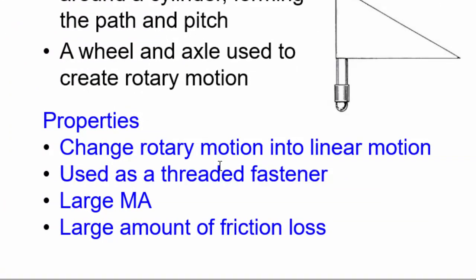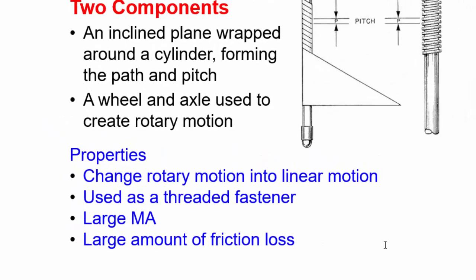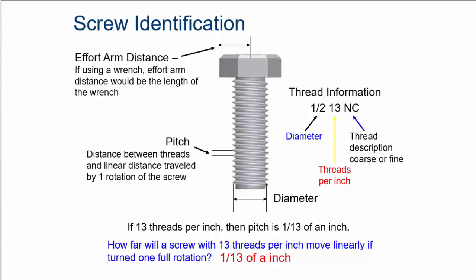And what do you use a screw for? It changes rotary motion into linear motion. You use it as a fastener. It's a screw. You put a nut and a bolt together, and you can hold things together. It has a very large mechanical advantage, but there's also a large amount of friction loss as well when you use it.